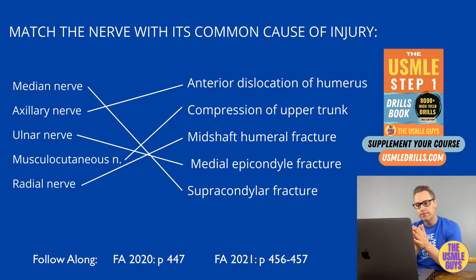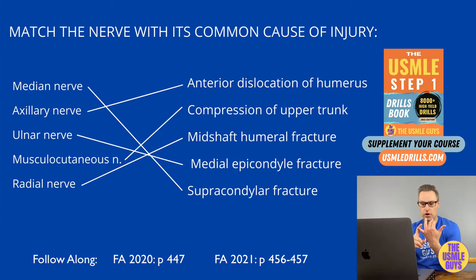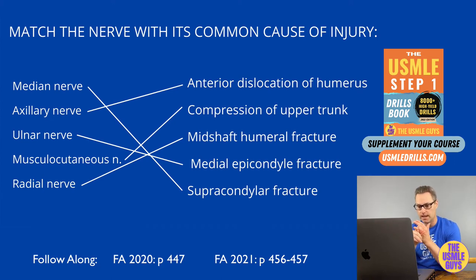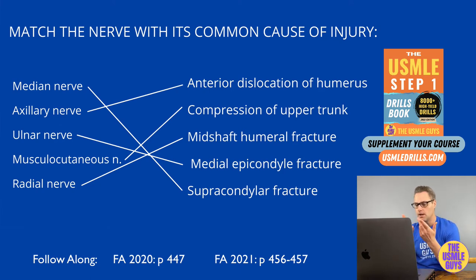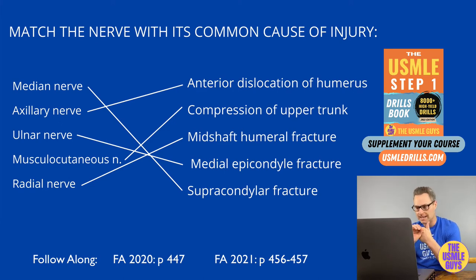The median nerve provides motor function to all muscles of the anterior compartment of the forearm except the flexor carpi ulnaris and the medial two parts of the flexor digitorum profundus, and also supplies the intrinsic muscles of the hand. Common causes of median nerve injury include supracondylar fractures of the humerus, carpal tunnel compression, stab wounds to the antecubital fossa, and deep wrist lacerations.